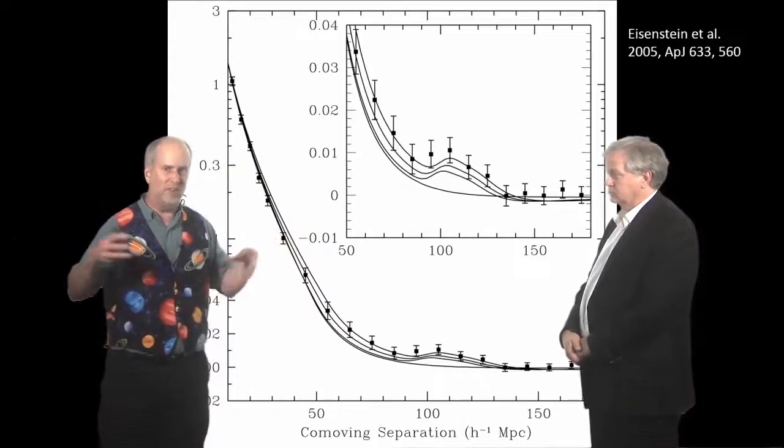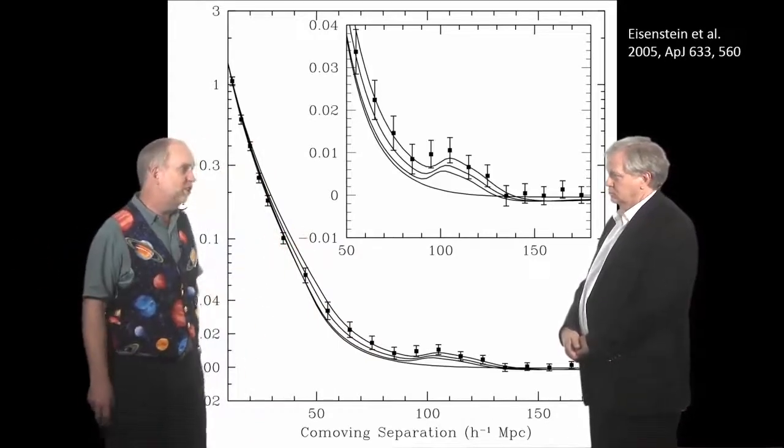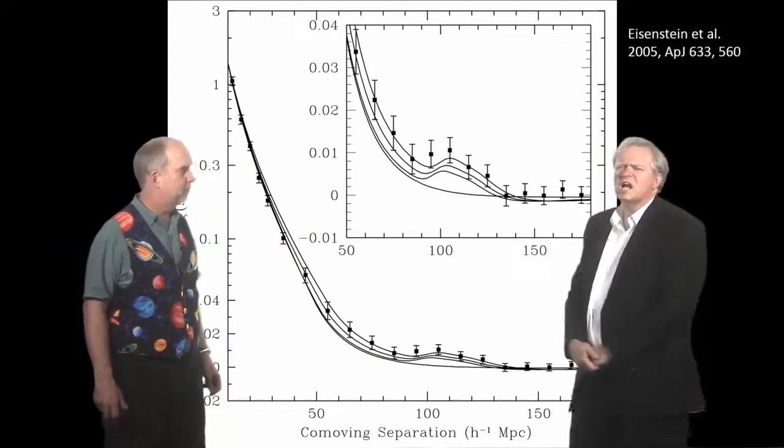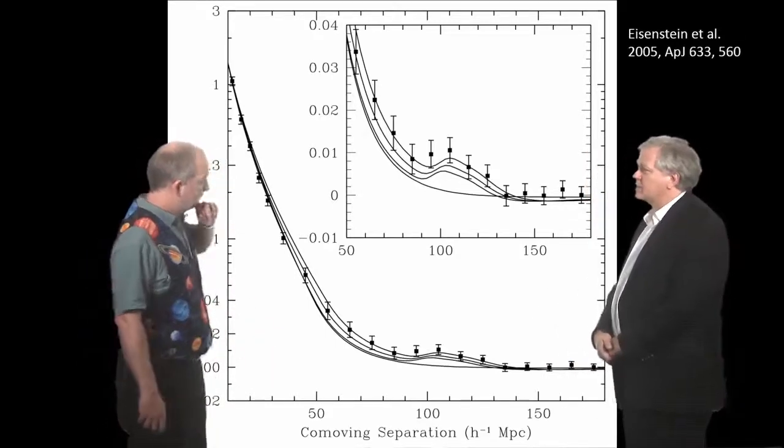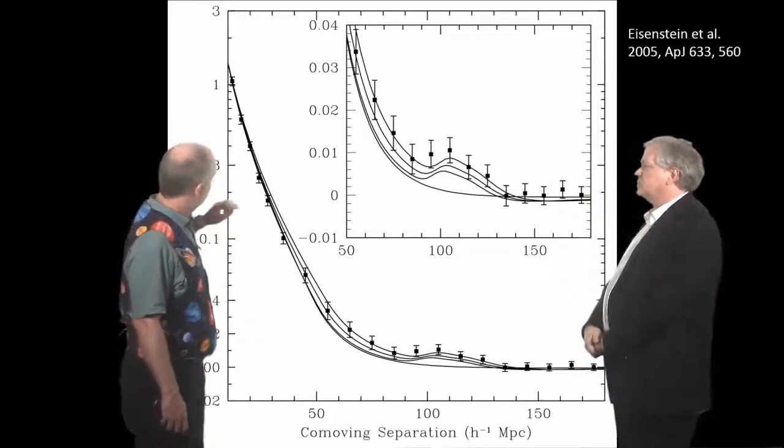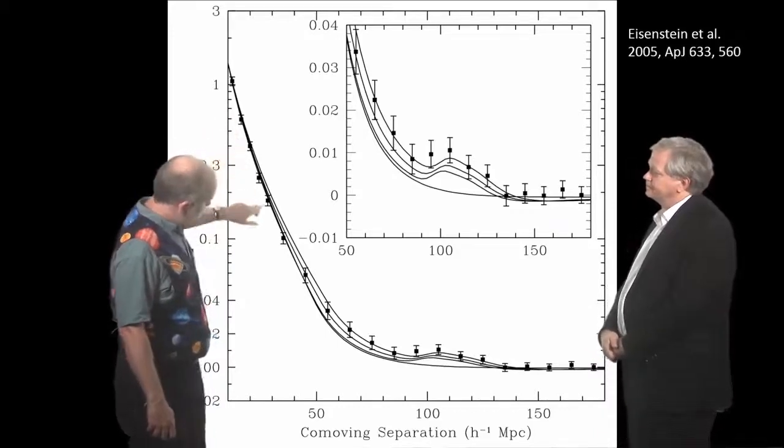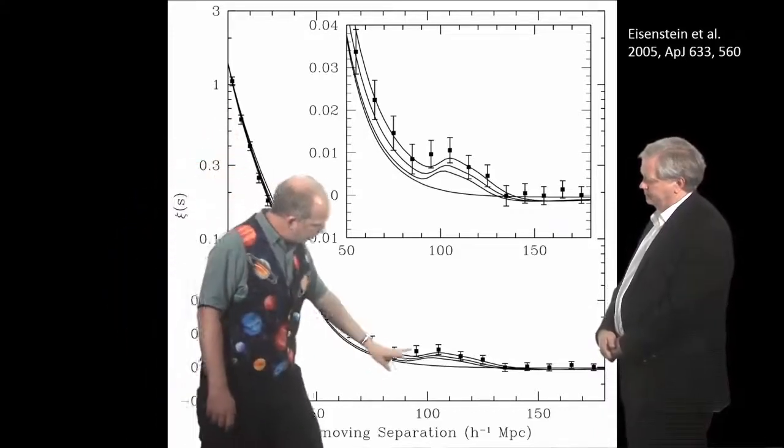But by the time you're out on scales of like 100 megaparsecs, that's so enormous that galaxies are not appreciably attracting each other on those sort of scales. Yeah, they've moved only a tiny little bit. So, they're at where they were back at the time of the Big Bang, just with the expansion of the universe. What you can see is clustered strongly, it drops off, it drops off, it drops off, and then suddenly there's a little bump over here.